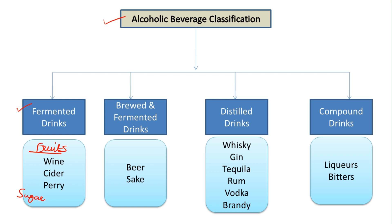That sugar can be converted into alcohol directly by the fermentation process. These are fermented drinks — like wine, which is made from grapes; cider, which is made from cider apples; and perry, which is made from pears. All these fruits have sugar readily available which can be fermented directly into alcohol.